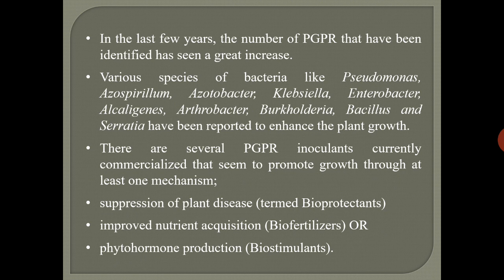Lastly, repression of soil-borne pathogens is an indirect method, done by the production of hydrogen cyanide, siderophores, antibiotics, and competition for nutrients. In the last few years, the number of PGPR identified has seen a great increase. Various species like Pseudomonas, Azospirillum, Azotobacter, Klebsiella, Enterobacter, Alcaligenes, Arthrobacter, Burkholderia, Bacillus, and Serratia have been reported to enhance plant growth. There are several PGPR inoculants currently commercialized that promote growth through at least one mechanism.